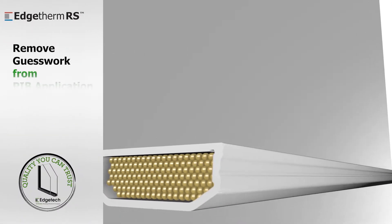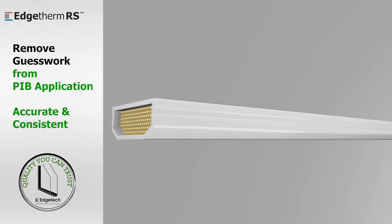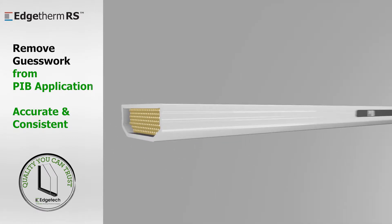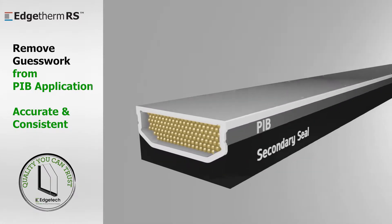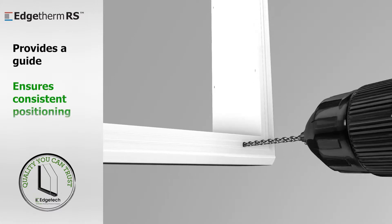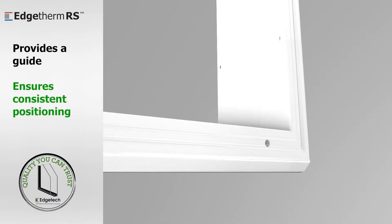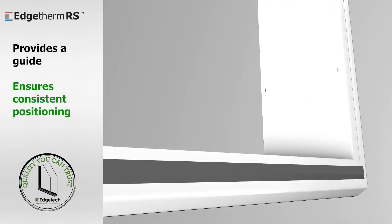EdgeTherm RS removes the guesswork from PIB application. The side groove enables accurate and consistent application of the bead into the right position on the spacer bar, improving both the productivity and quality of unit production. In addition, for manufacturers using side-drilled desiccant fill, it provides the drill a guide for positioning to ensure PIB covers the hole.